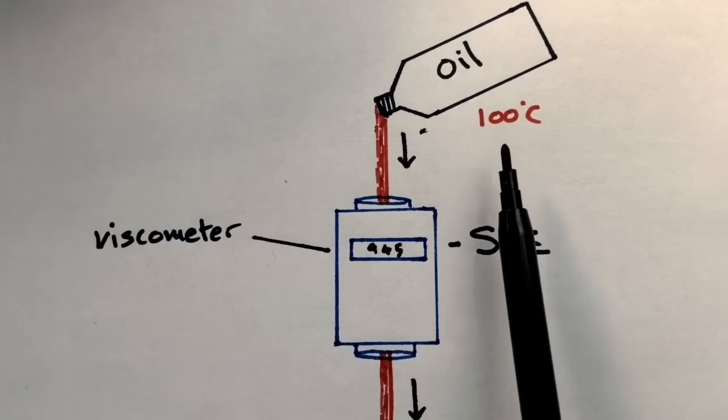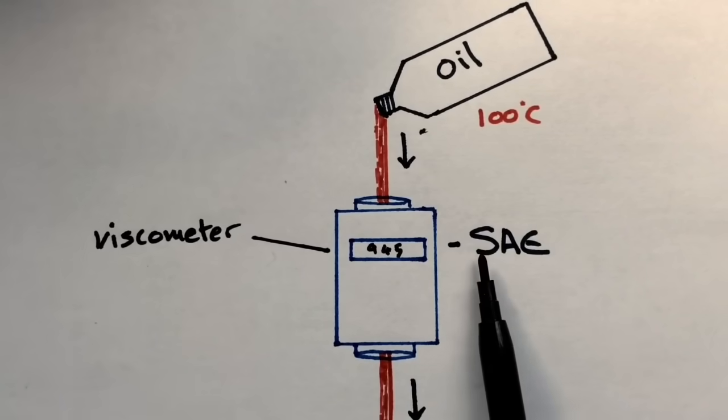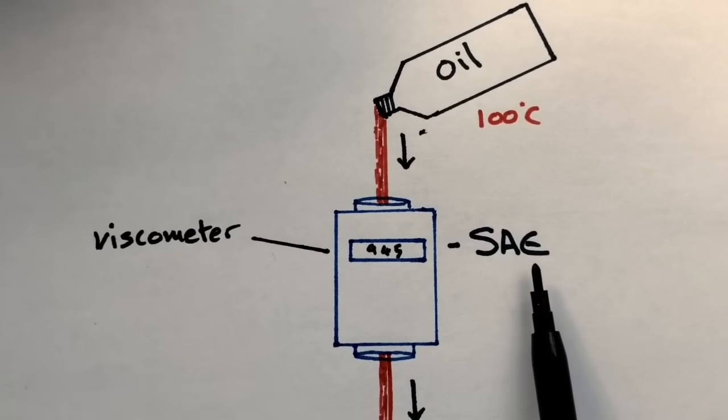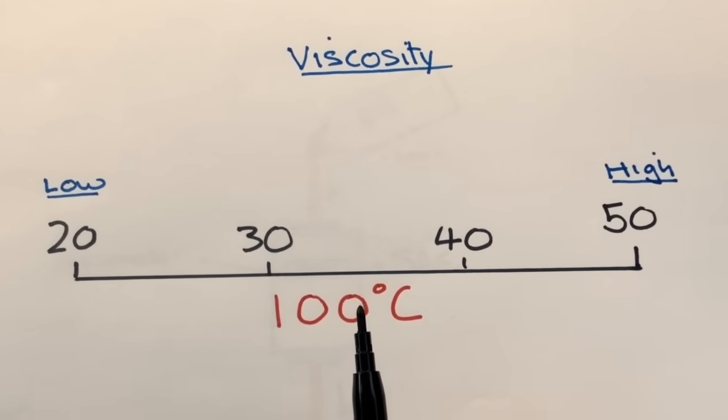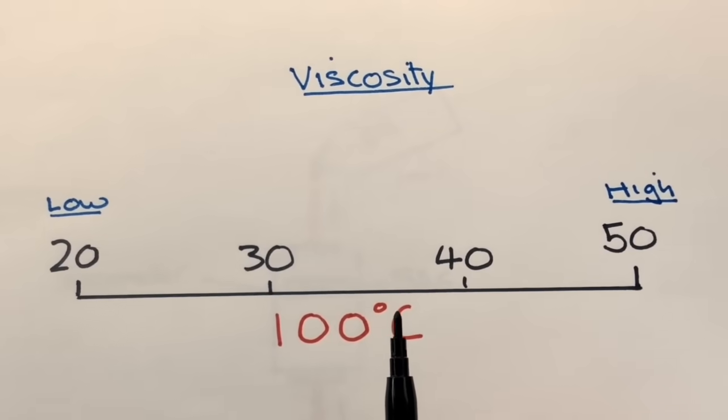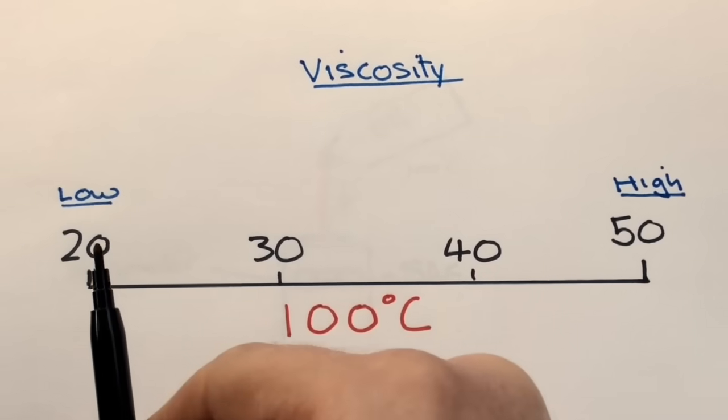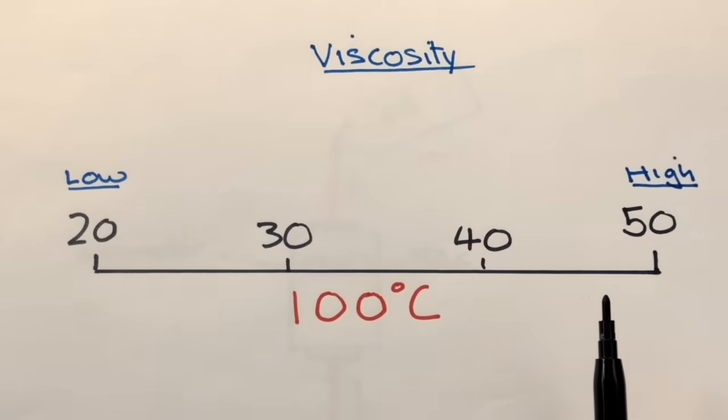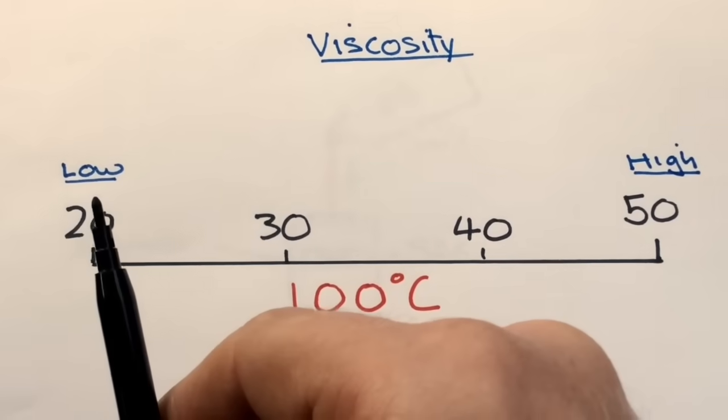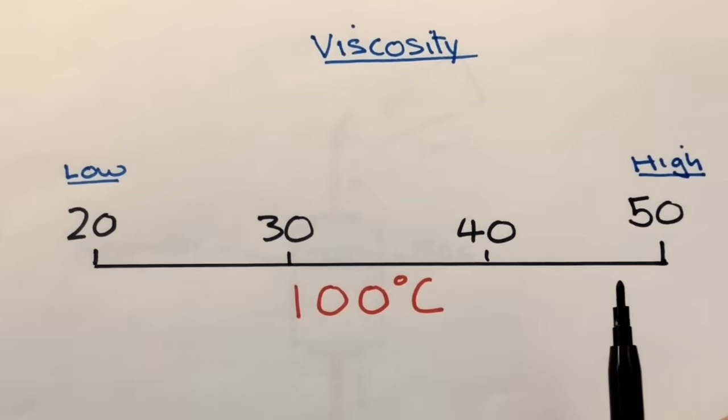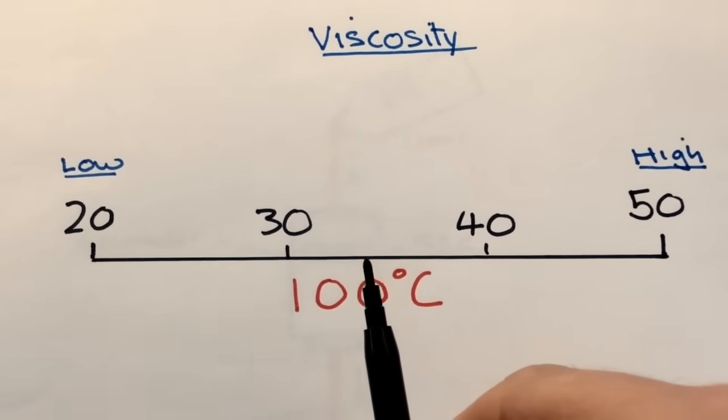Now the slower it travels through here at this temperature, the higher the number is given—the higher the SAE number. The faster it travels down here, the lower the SAE number. So this all relates to its viscosity or its thickness. The faster it travels through the viscometer, the lower the viscosity, and the slower it travels through, the higher the viscosity—so the thicker. The thinner travels through quicker, the thicker travels through slower, and that's where we get these numbers from.